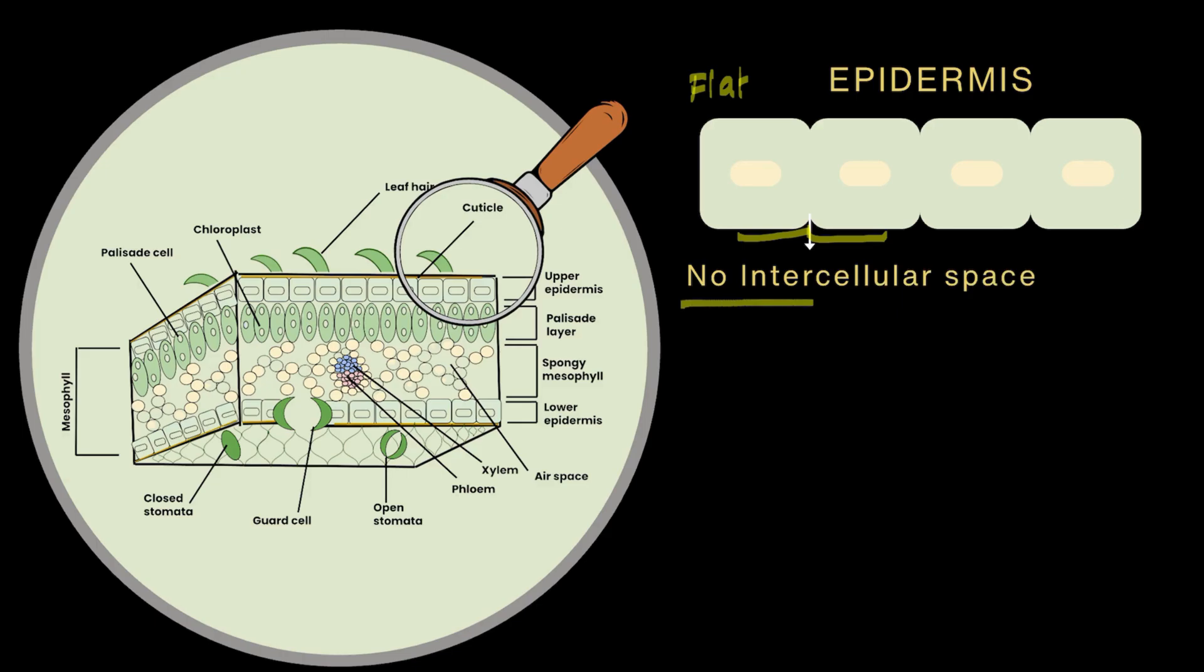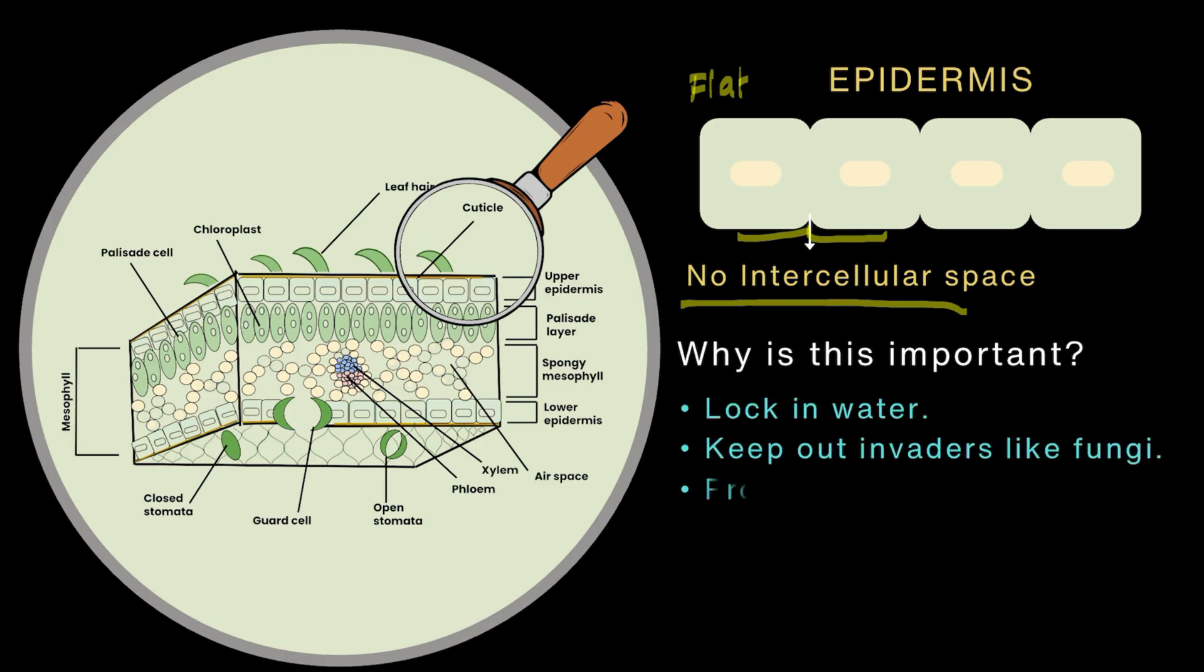So, there is no intercellular space in between. And this tight packing is super important because it locks in the water, it keeps out invaders like fungi and it protects the plant from mechanical damage.